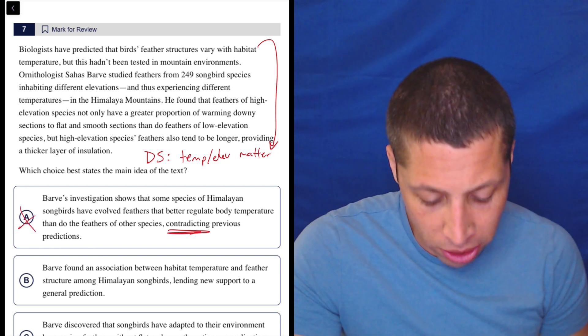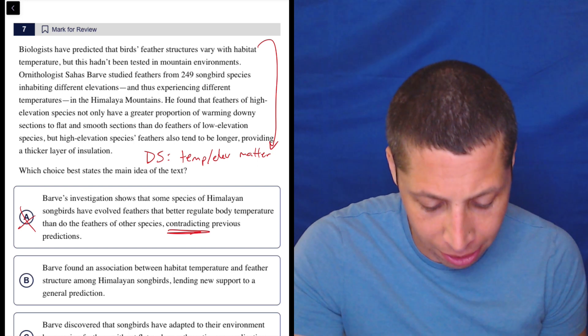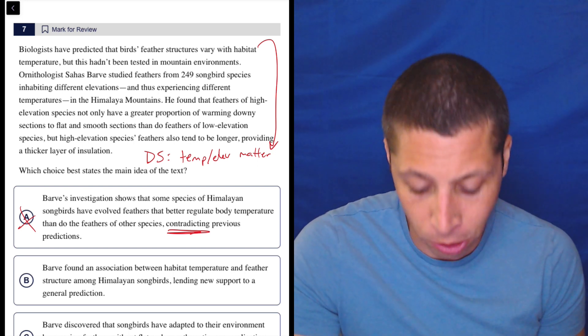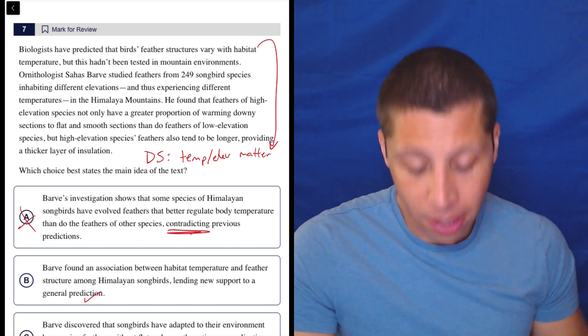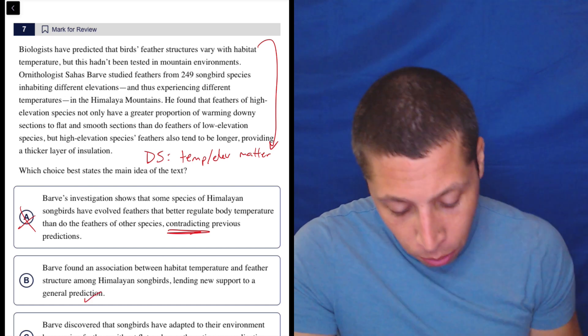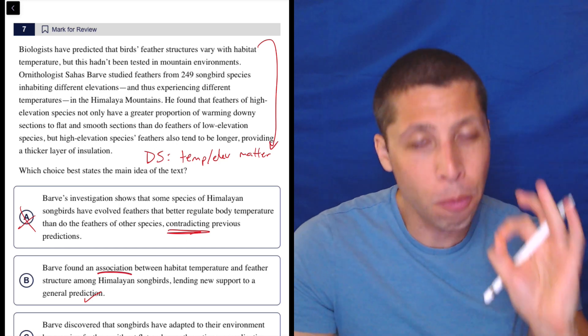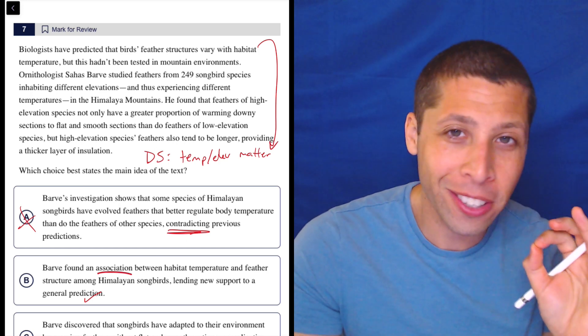B, Barv found an association between habitat temperature and feather structure among Himalayan songbirds lending new support to a general prediction. Well, as we just said, the initial prediction was that it would matter. It does matter. So there you go. And that word association is so beautiful because it says nothing really at all.